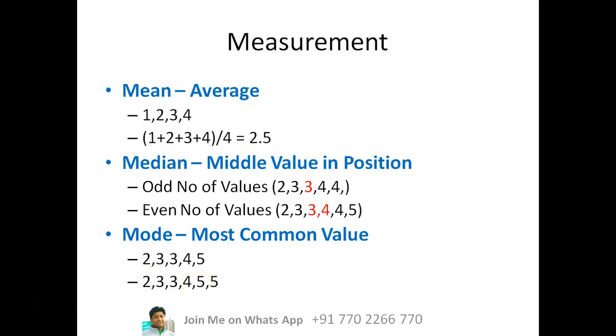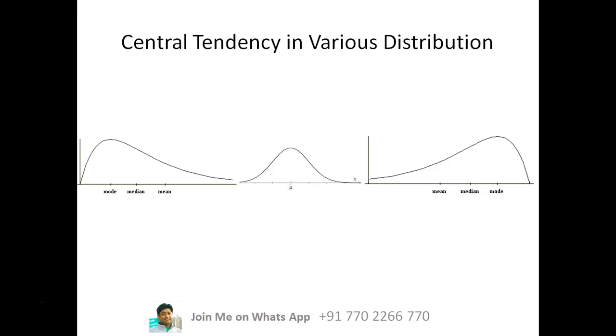So to sum up, three ways you can use: mean, median, mode. Now a lot of questions these days are asked about what is the central tendency in various kinds of distribution, which means what is the mean, median, mode in normal distribution curve, in a left-sided or right-sided distribution curve.